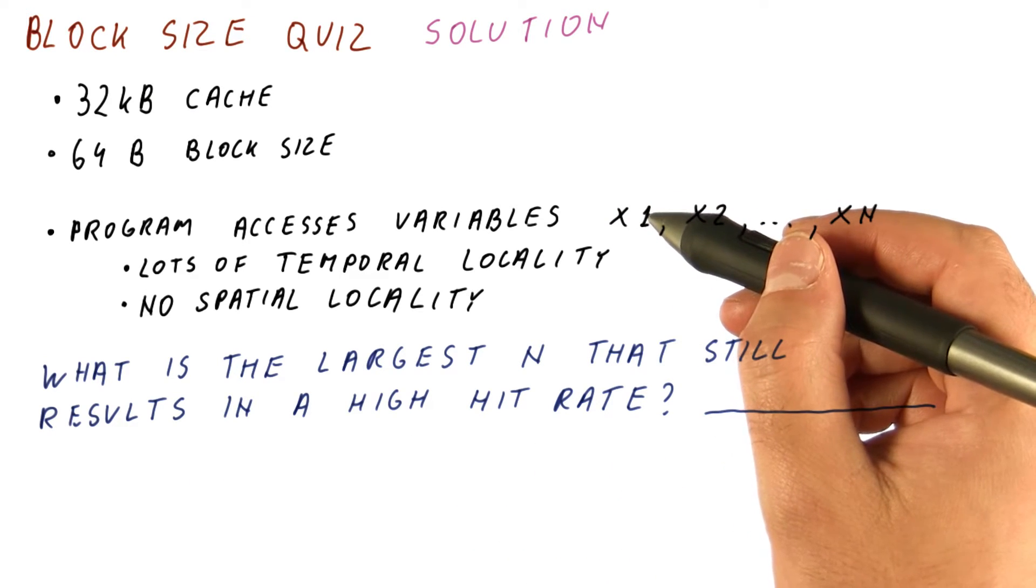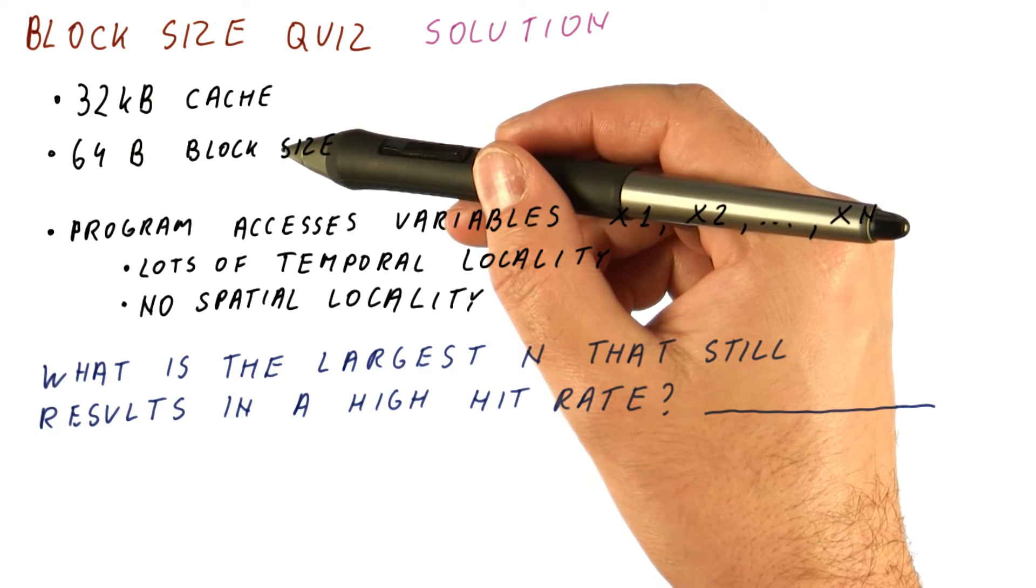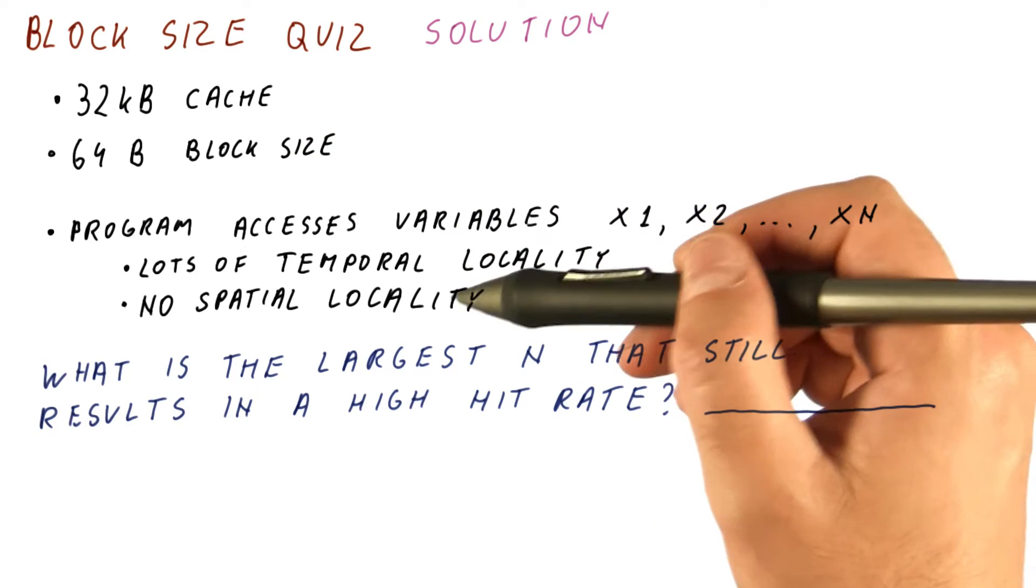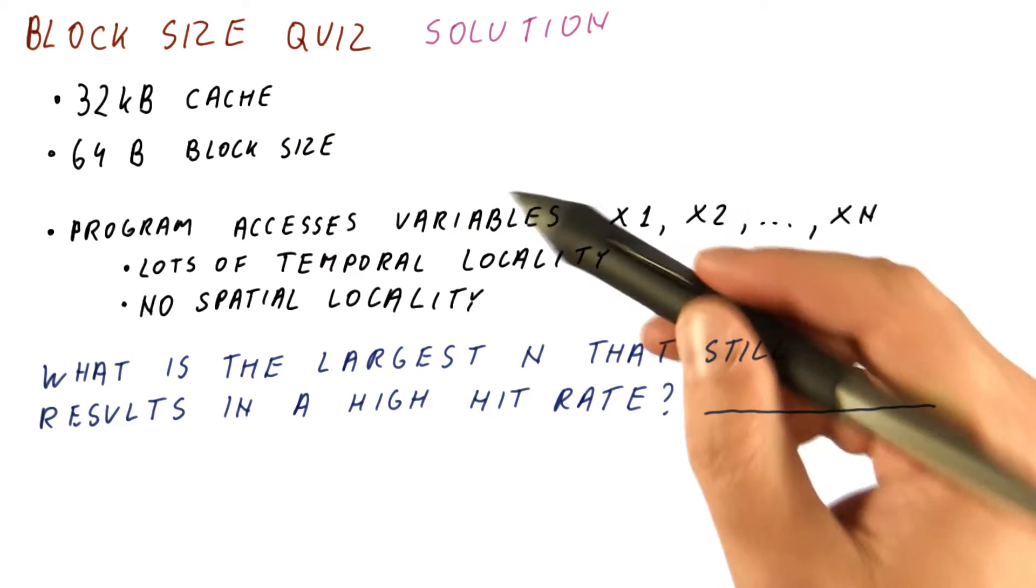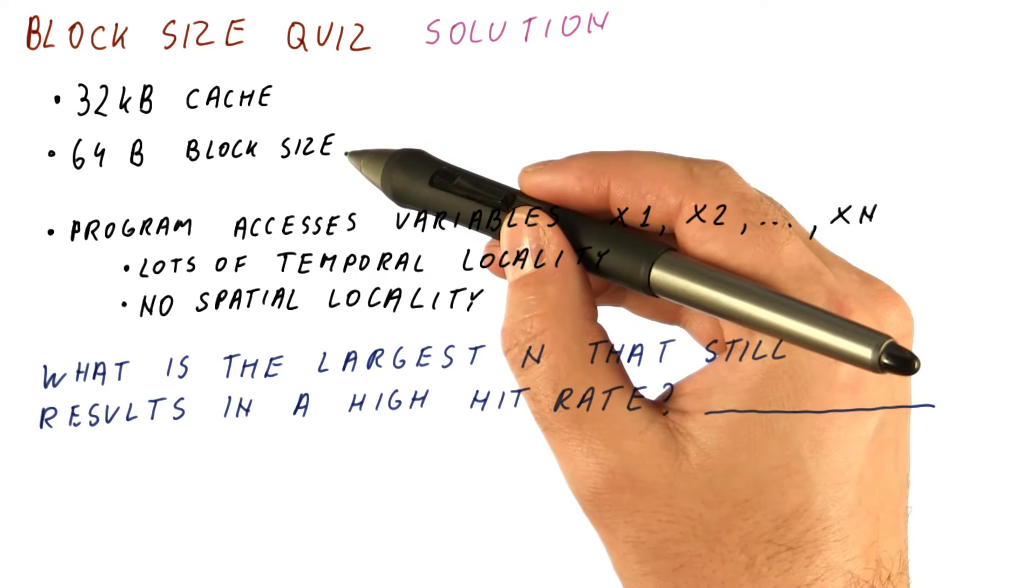Now, x1, when we bring it into the cache, we will bring an entire block worth of stuff around it. And because there is no spatial locality, that means that none of the other variables will be in that block.